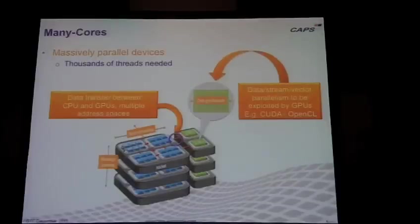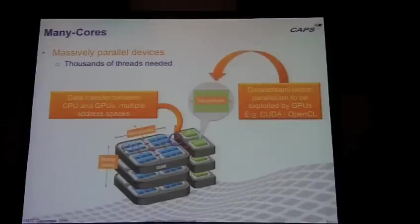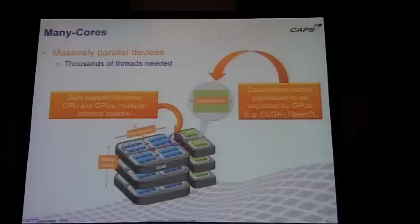The GPU is actually the most parallel manycore that exists. The PCI Express bus is a limitation in the system and the GPU has its own memory — that is actually where it takes its power. The important thing here is the level of parallelism you need to keep such a device busy is in thousands of threads.